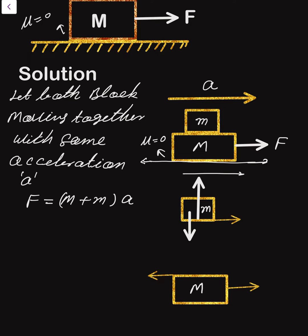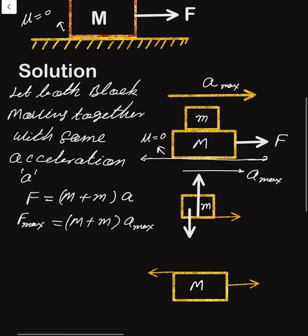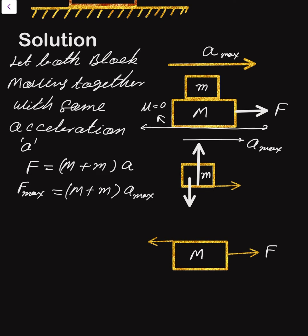So F is called F max and that acceleration is called also maximum acceleration, a max, because no frictional force is available here. Both blocks move with the same acceleration and that force is F max.